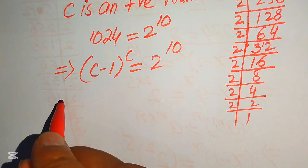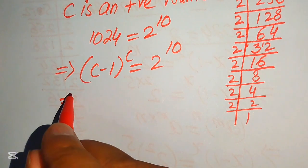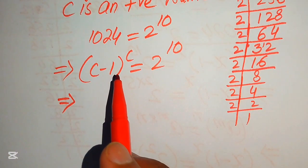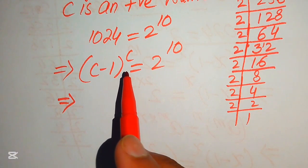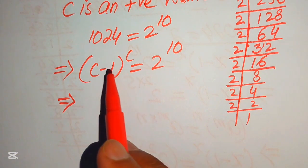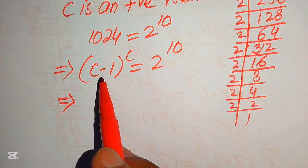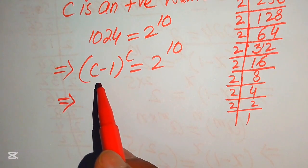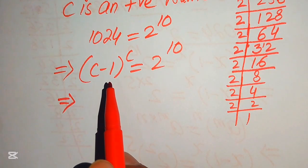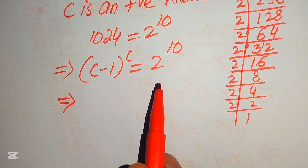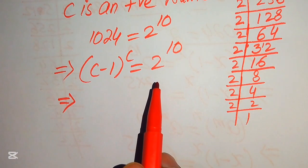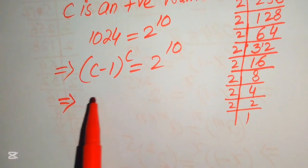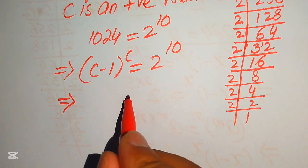Now focus on the left hand side — the base is 1 subtracted from its exponent. This means if our exponent is c then the base is c minus 1. Similarly, if our exponent is 10 then the base would be 10 minus 1. So now we need to make this same type of condition on the right hand side.